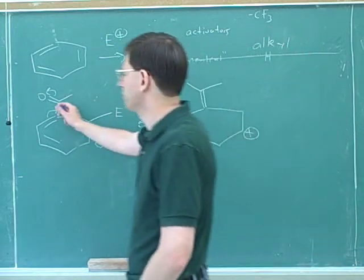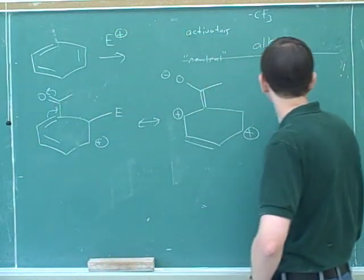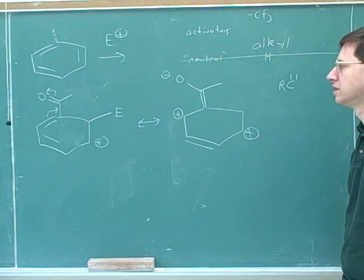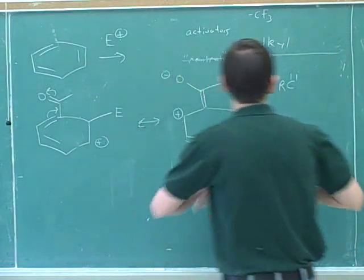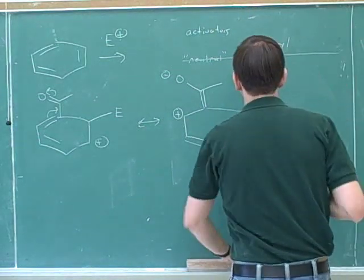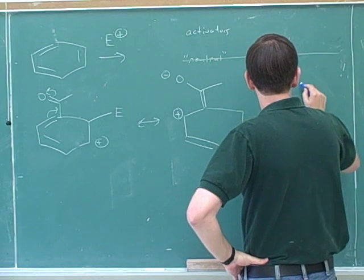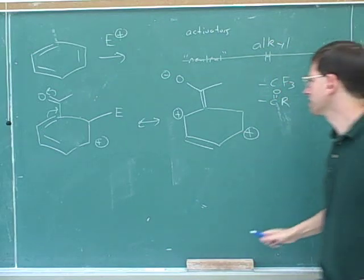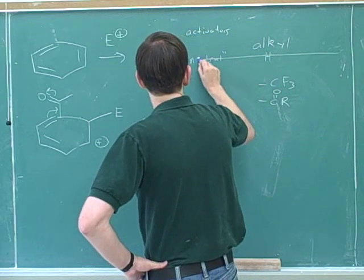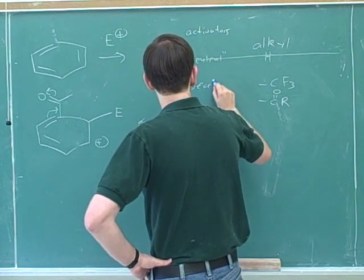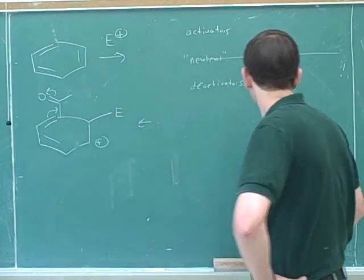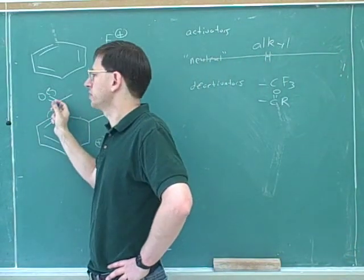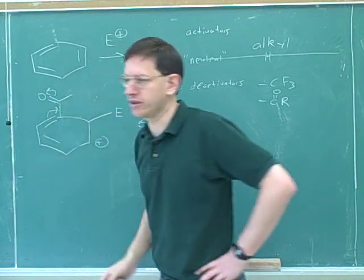So a carbonyl substituent is electron withdrawing and therefore a deactivator. CF3 was also a deactivator because it's electron withdrawing by induction, while carbonyl groups are electron withdrawing by resonance. We already talked about carbonyl-type substituents in the context of Diels-Alder, where they were also electron withdrawing — same conclusion applies here.